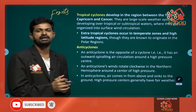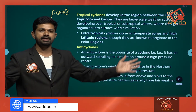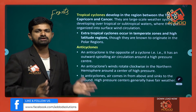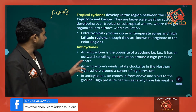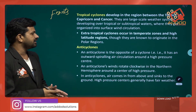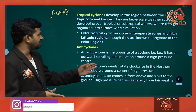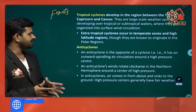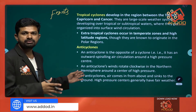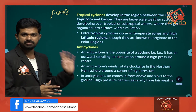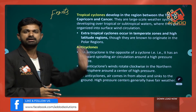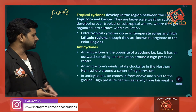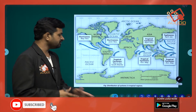Anti-cyclones are the opposite phenomenon — a high-pressure center that pushes air outward, drawing air from above and sinking it to the ground. In an anti-cyclone, there is no rain or precipitation. An anti-cyclone has an outward spiraling air circulation around a high-pressure center. Anti-cyclone winds rotate clockwise in the northern hemisphere, while cyclone winds rotate anti-clockwise. In anti-cyclones, air comes from above, sinks to the ground, and high-pressure centers generally have fair weather.